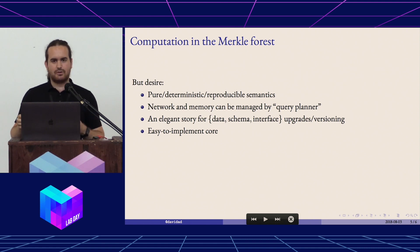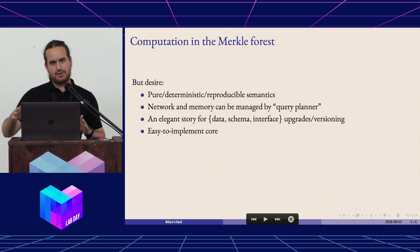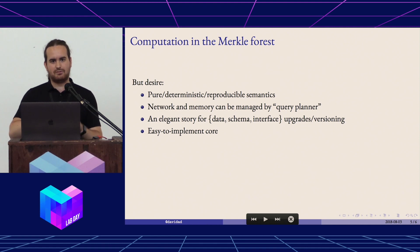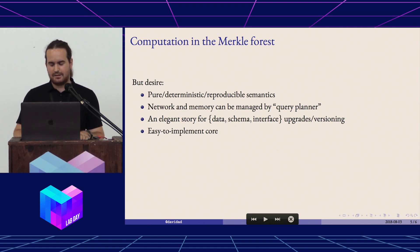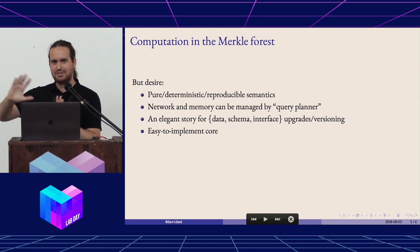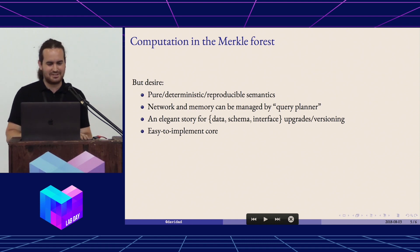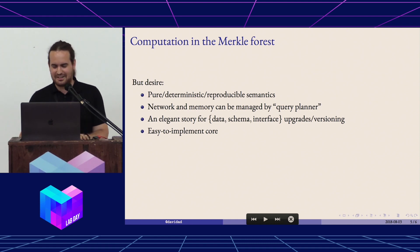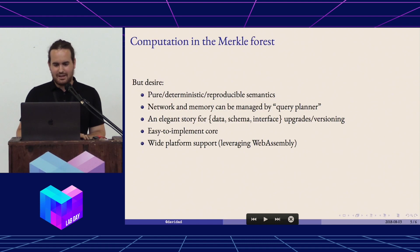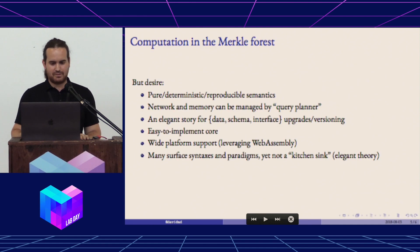We want the core of this to be easy to implement, so we want to build as many features as possible on top of other features, so that at the bottom it's very, very simple. The untyped lambda calculus is the ultimate version of this, which we're going to try to get as close to as we can, with wide platform support leveraging WebAssembly.